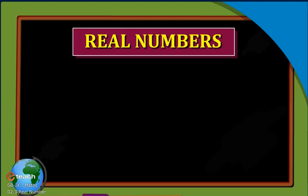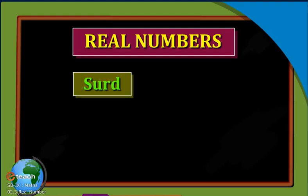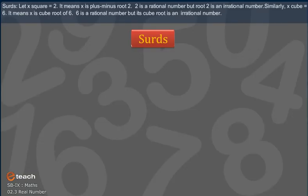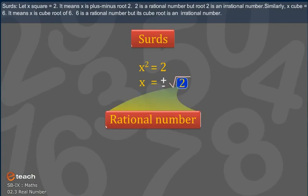Real Numbers. Introduction to Surds, laws related to Surds, forms of Surds, rationalization of Surds. Let x squared equal to 2. It means x is plus or minus root 2. 2 is a rational number but root 2 is an irrational number.